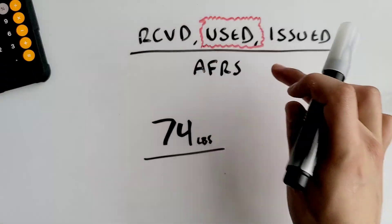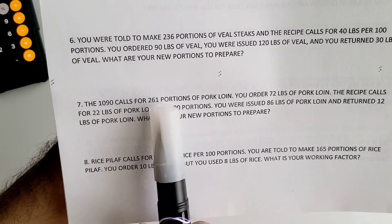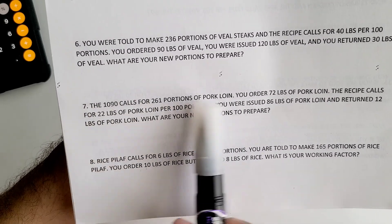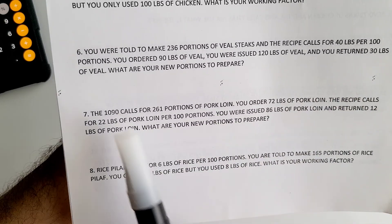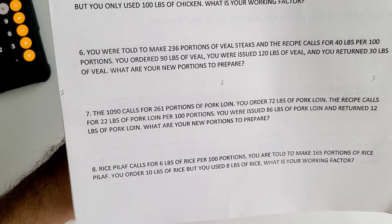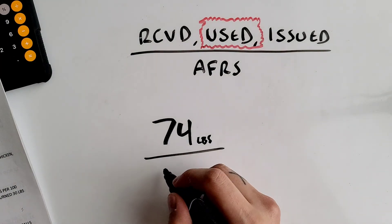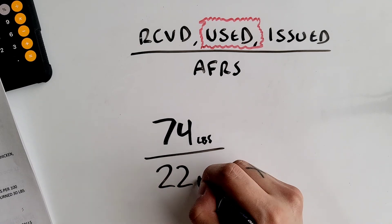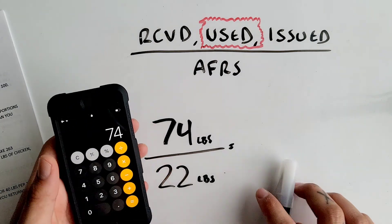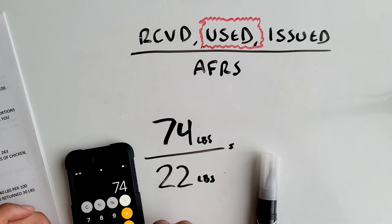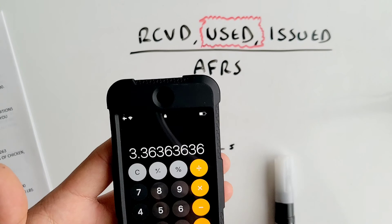Now divide that by your AFRS — what your recipe calls for. The 1090 calls for 261 portions, so ignore that number. You ordered 72 pounds, and the recipe calls for 22 pounds of pork loin per 100 portions. That 22 pounds is the number you need. Put it under the 74 and divide: 74 divided by 22 equals 3.3636.